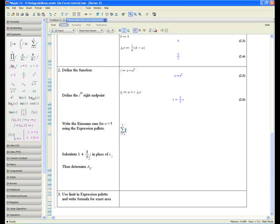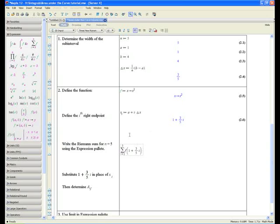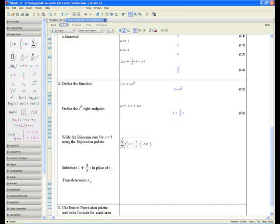The next step is substitute 1 plus 3 fifths i in place of x_i. So now that we're at the function, type f of x_i should be there. We can pull a really neat trick. Highlight the right side of x_i, 1 plus 3 fifths i, and drag it into the brackets there. Close bracket. Multiplied by the width of the sub interval. Again, you can simply copy and paste it there.